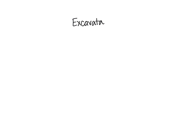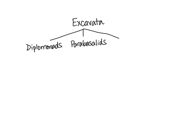To review: the supergroup Excavata can be divided into three subgroups — the diplomonads, the parabasalids, and the euglenozoans. The euglenozoans can further be broken down into euglenoids and kinetoplastids.